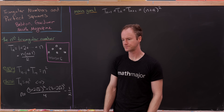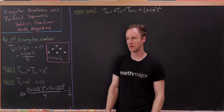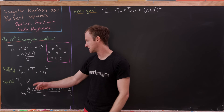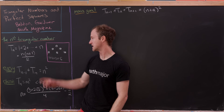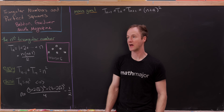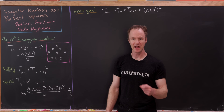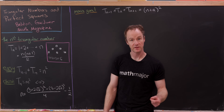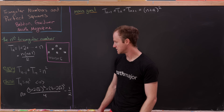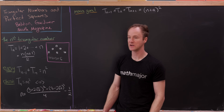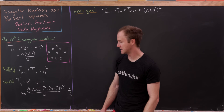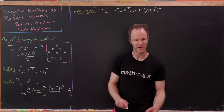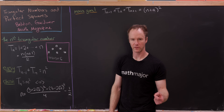A classic result often seen in elementary number theory is: when is a triangular number also a square number? This amounts to finding a solution to t sub n equals m squared, or equivalently n times n plus 1 over 2 equals m squared. We're not going to go through that here, but if you'd like to see a video on that, post it in the comments. It has to do with solutions to a so-called Pell's equation, and you end up with a parametrization of values of n involving 3 plus 2 times the square root of 2 to the k power plus 3 minus 2 times the square root of 2 to the k power, all over 4, minus one half.